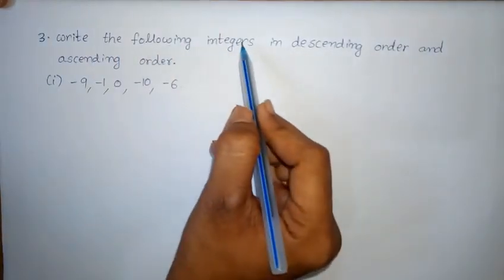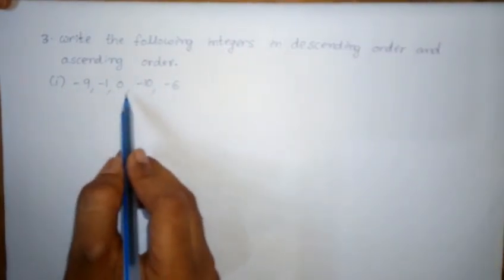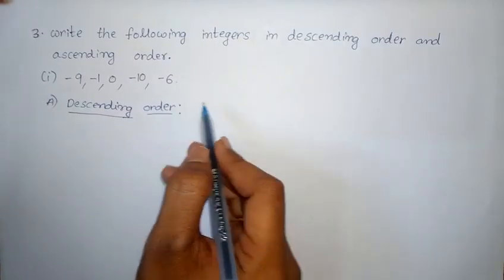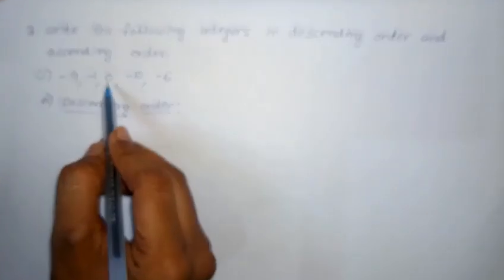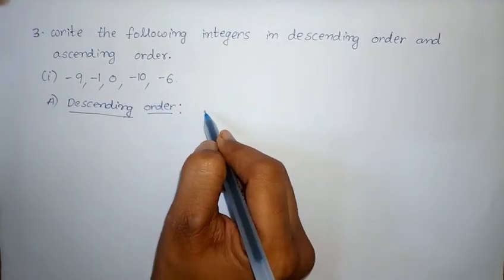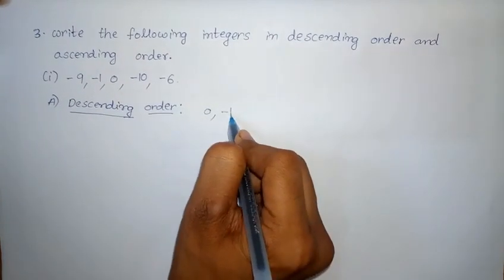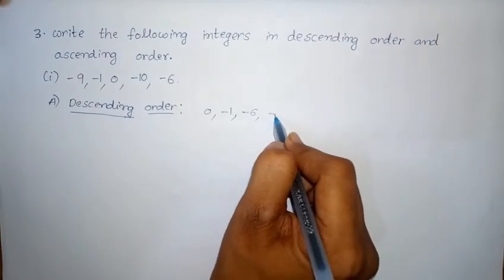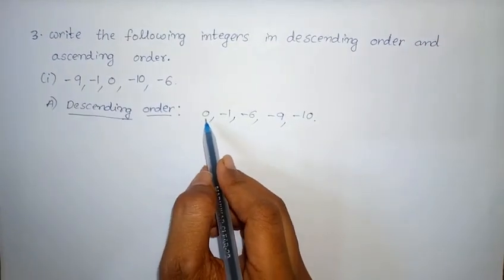3rd Roman: Write the following integers in descending and ascending order. 3rd Roman 1st one: minus 1, minus 1, 0, minus 10, minus 6. Descending order means big number to small number. Among the 5 numbers, the biggest is 0, because all negative numbers are smaller than 0. So descending order: 0, minus 1, minus 6, minus 9, minus 10. Big number to small number.